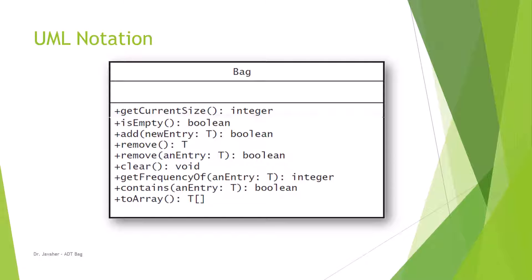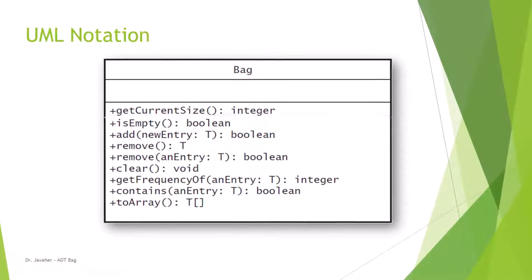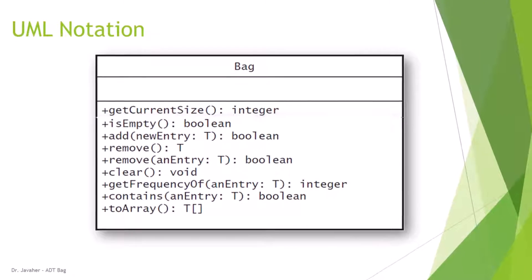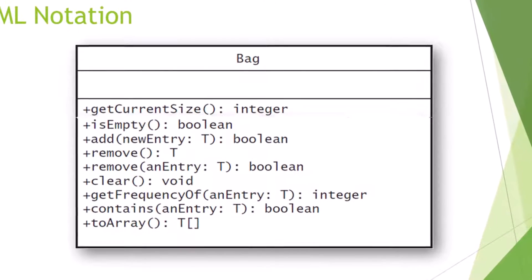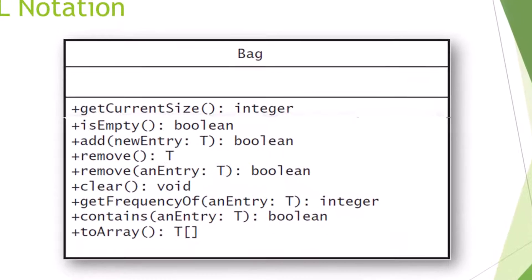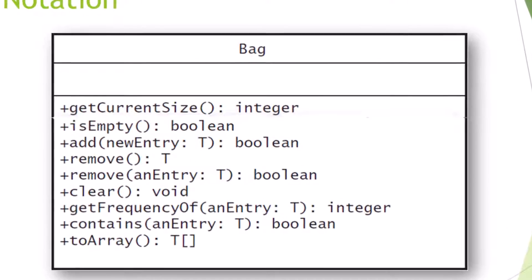Here's a look at the UML diagram for Bag. As we've talked about, we can find out the current size of the bag, check if it's empty, add, remove, remove one occurrence of duplicates, completely clear, and perform other operations as seen here. Now let's take a look at how this gets translated into code.